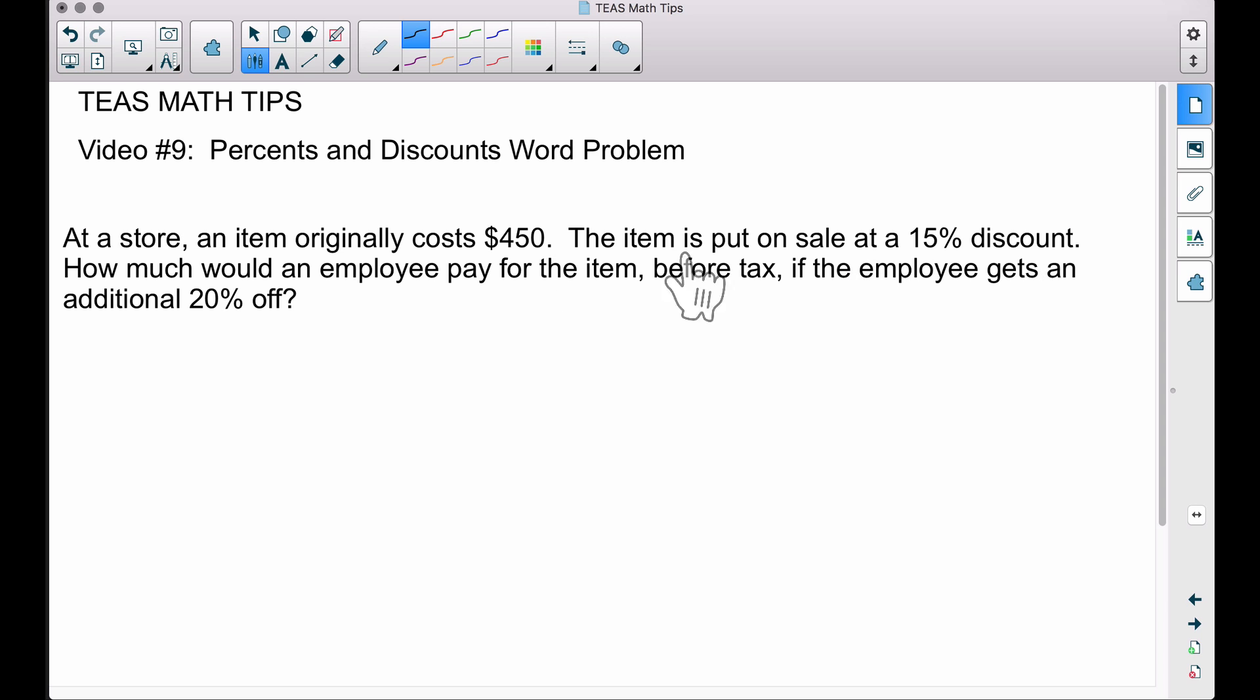How much would an employee pay for the item before tax if the employee gets an additional 20% off? What you don't want to do is this: you do not want to take 15% plus 20% and assume the employee gets a 35% discount. That is not how it works.